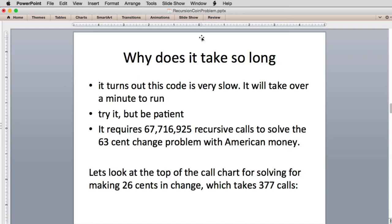So why does it take so long? It turns out it's really slow. It can take over a minute depending on your computer. The problem is it requires 67,716,925 recursive calls to solve the 63 cent problem. So imagine you're making change for 99 cents. It would take a huge amount of time. In fact, this type of algorithm is called a combinatoric algorithm, and it's one of the fastest big O's - it's factorial. So it grows really, really fast in terms of the time it takes as the problem gets bigger.